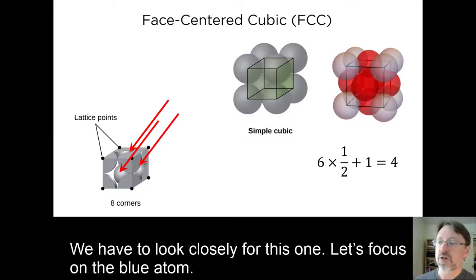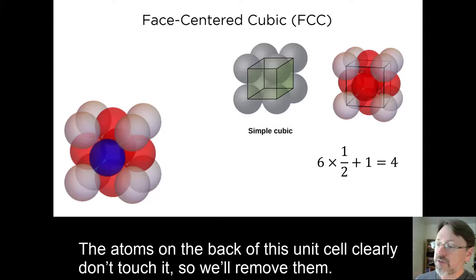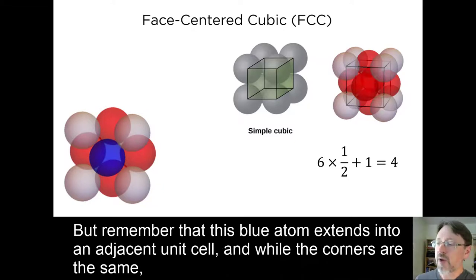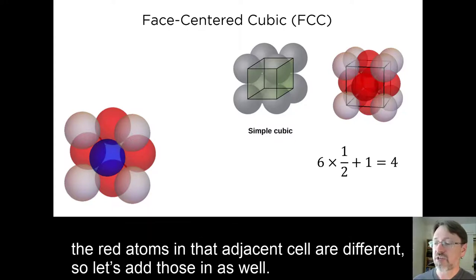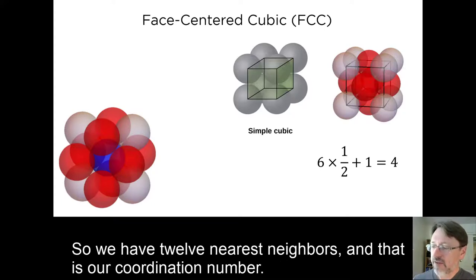Coordination number? We have to look closely for this one. Let's focus on the blue atom here. The atoms in the back of this unit cell clearly don't touch it, so we'll remove them. But remember that this blue atom extends into an adjacent unit cell. And while the corners are the same, the red atoms in that adjacent cell are different. So let's add those in as well. So, we have 12 nearest neighbors. And that is our coordination number.